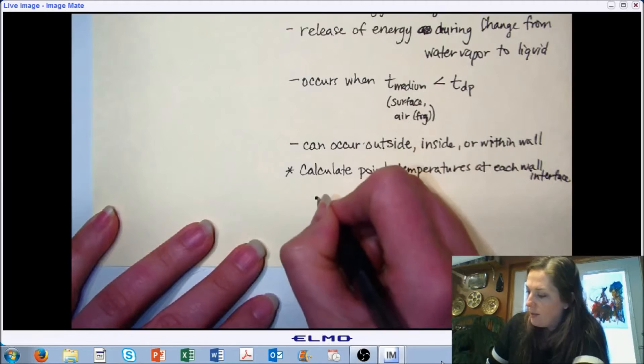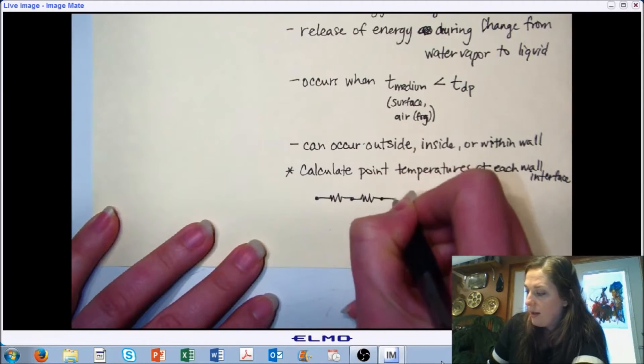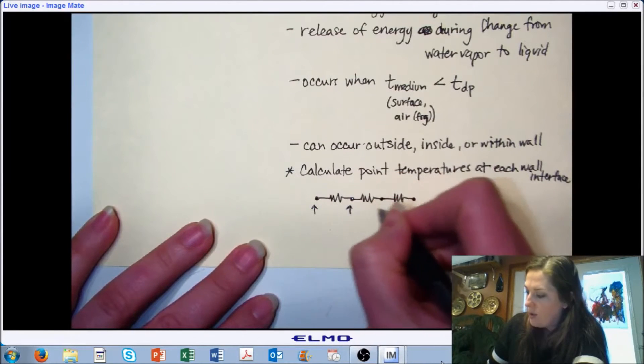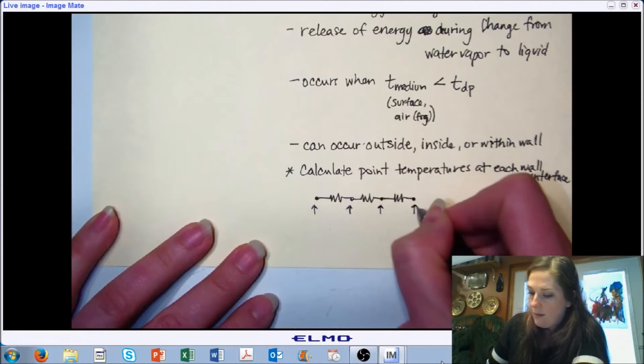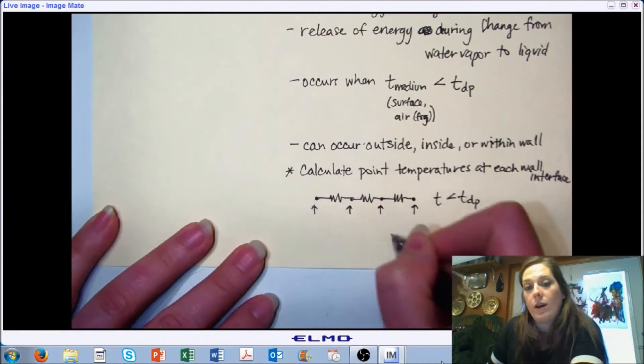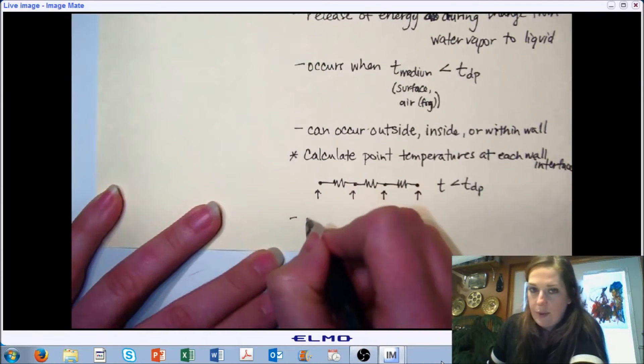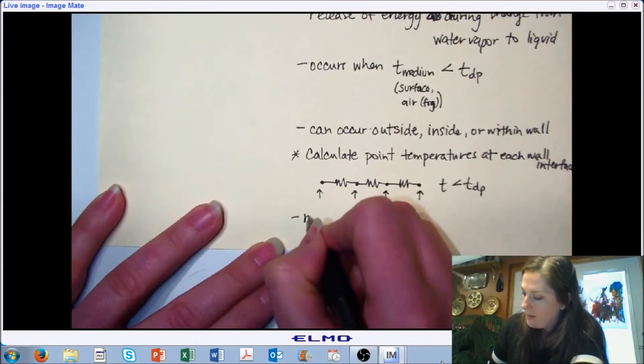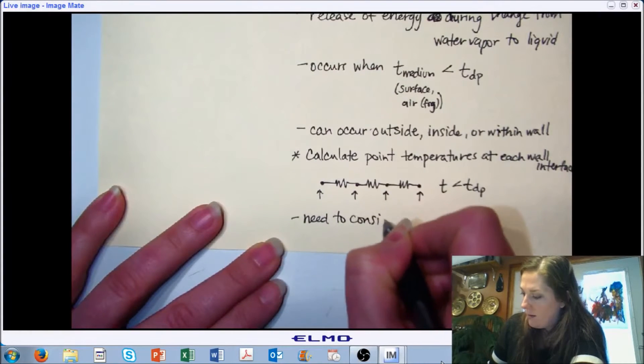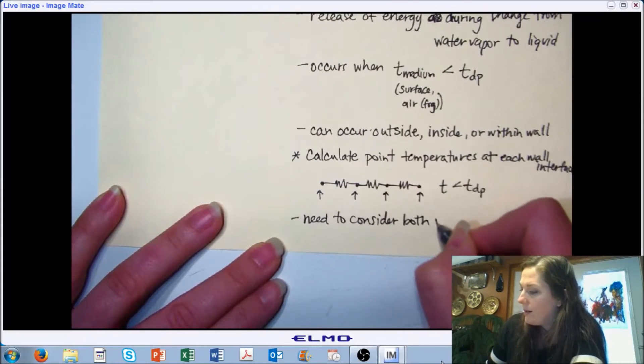And so it looks something like this on our electric analog or our thermal resistance circuit. So essentially you would calculate the temperature at each of your nodes. And if any of those temperatures is less than your dew point temperature, then you have condensation within your wall. It's important to consider this for both winter and summer conditions.